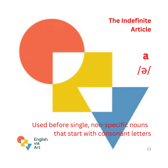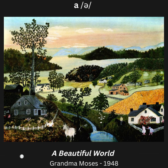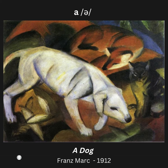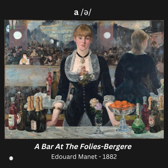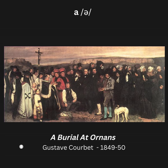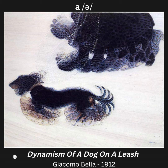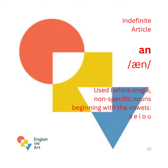The Indefinite Article A is used before single, non-specific nouns that start with consonant letters. Girl at a sewing machine. A beautiful world. A man. A dog. A kiss. A bar at the Folie Bergère. A friend's reunion. A spring beauty. A burial at Orna. Dynamism of a dog on a leash. A famous man.